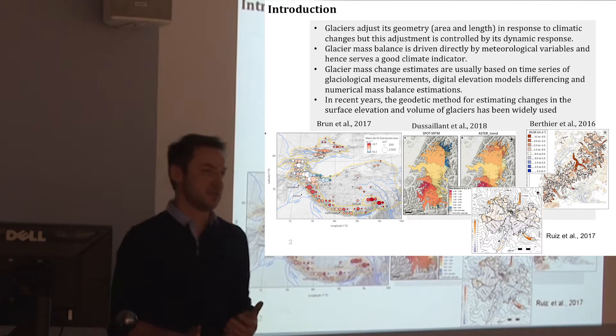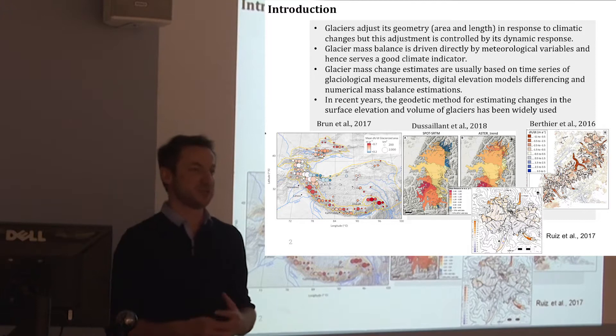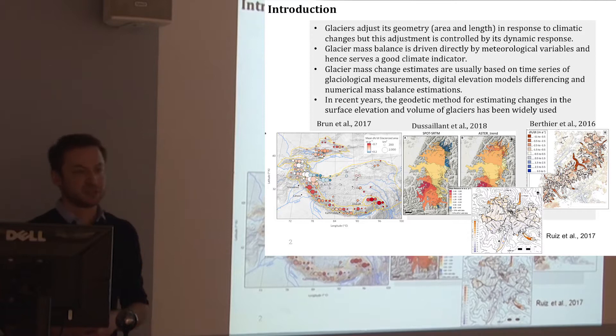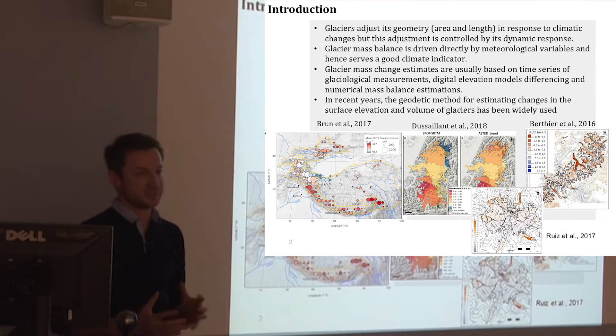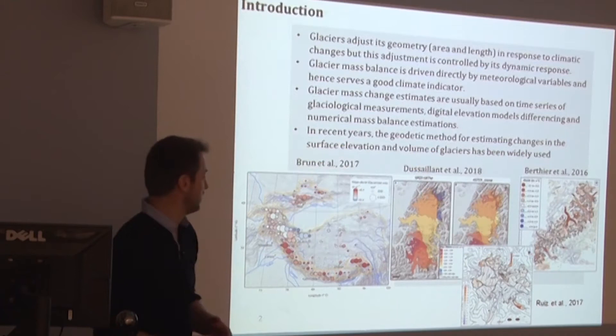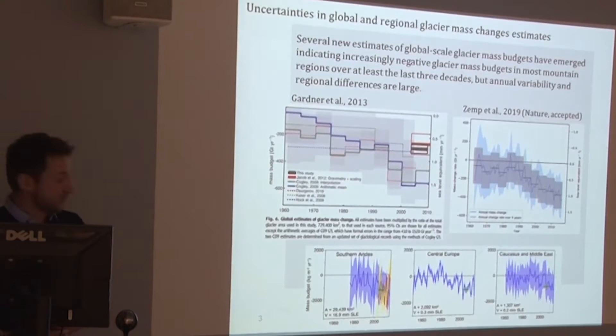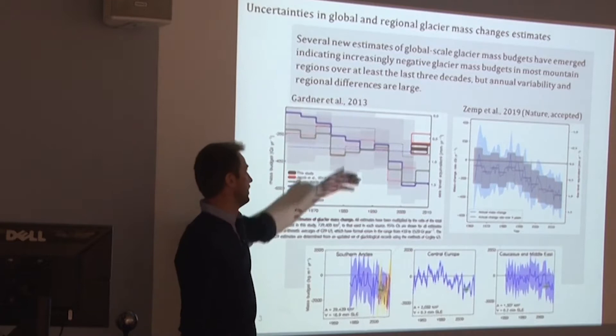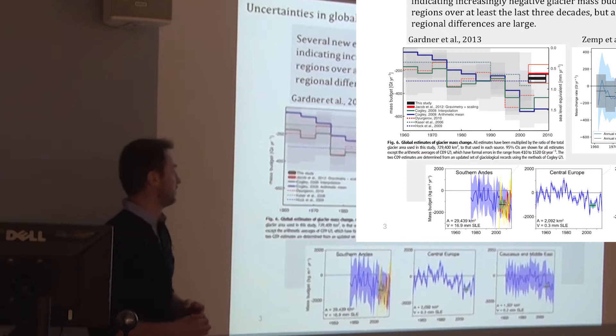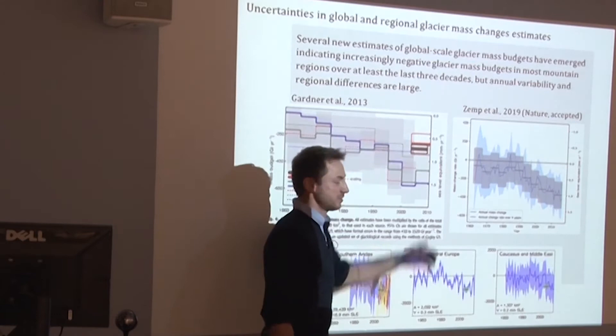It's either mass balance measurements or remote sensing — geodetic mass balance measurements. Here are some examples published recently dealing with thousands of glaciers by comparing digital elevation models. I just want to mention this paper by Brun et al. in 2017: they did the whole High Mountain Asia assessment of glacier changes between 2000 and 2011. And just to show you these uncertainties — this was the state-of-the-art work back in 2013 based on GRACE data, and you can see how spread these numbers are.